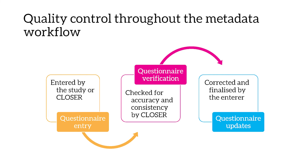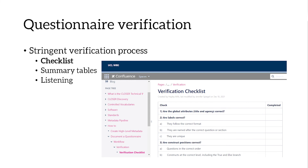Our general metadata workflow is designed to produce questionnaire metadata to the highest possible standard. The first stage is questionnaire entry, where questionnaires are entered either by the study or by CLOSER. Every questionnaire is then checked for accuracy and consistency by CLOSER — this is called questionnaire verification. Finally, the verifier passes the questionnaire back to the enterer to make the changes. This process is advantageous because no matter how much experience the inputter has, mistakes are always found in verification. Having a feedback loop where the enterer makes the verification changes also gives them a chance to learn and improve for next time.